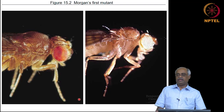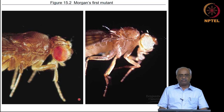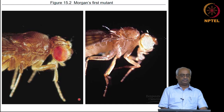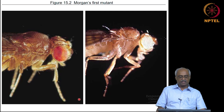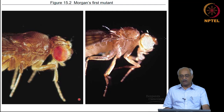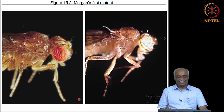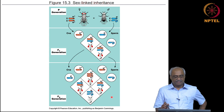Conclusive evidence that genes are on chromosomes came from Morgan's work. Unlike pea plants where many phenotypic variations were naturally available, in Morgan's experimental model Drosophila there were very few variations. After a long search he found just one male with white eyes, and by successfully setting up matings with that one male, he eventually discovered that genes are on chromosomes.